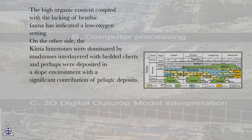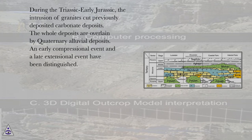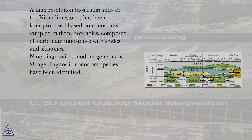The geological evolution of the Kinta Valley has been recently outlined as characterized by both deposition and structural deformation. During the Devonian, deposition started, composed of alternating sandstones and mudstones, followed in the Carboniferous by fine-grained shales, which are in turn overlain by Permian limestones. During the Triassic-Early Jurassic, the intrusion of granites cut previously deposited carbonate deposits. The whole deposits are overlain by Quaternary alluvial deposits. An early compressional event and a late extensional event have been distinguished. Folding and thrusting occurred during compression, also controlling the granitic intrusion, which was fractured due to compressional deformation. The extensional tectonic event resulted in the individuation of normal faults controlling the present-day drainage network evident from DEM analysis. A high-resolution biostratigraphy of the Kinta limestones has been proposed based on conodont samples from three boreholes composed of carbonate mudstones with shales and siltstones.